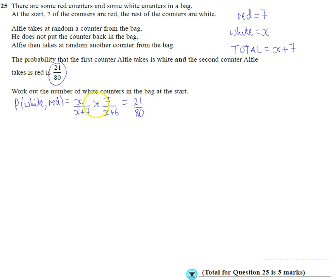So what we're going to do is we sort this counter expression out. We've got the denominator which is a quadratic expression, X plus 7 times X plus 6. Multiply across the top to get 7X. And we know that answer is 21 over 80.